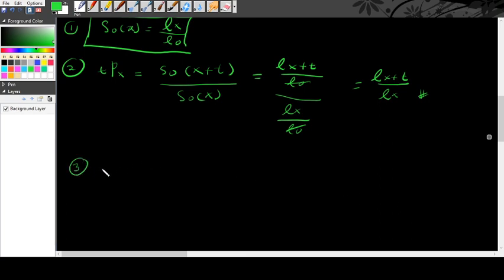The third one would be Tqx. From the above, I know that Tqx is 1 minus Tpx, which also equals 1 minus L(x+t) over Lx. I can write this in terms of Lx and L(x+t) over Lx.